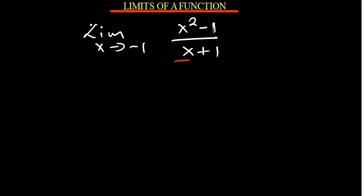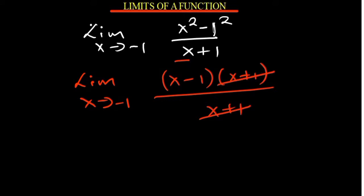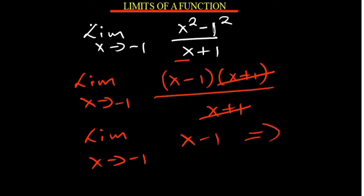Our 1 is the same as 1 squared. So our limit as x approaches negative 1 is going to be x minus 1 times x plus 1, over x plus 1. At this point we can see that the denominator is equivalent to one of the factors, so we can cancel it. You now have the limit as x approaches negative 1 of x minus 1. Plugging in: negative 1 minus 1 is negative 2. Therefore the limit is negative 2.